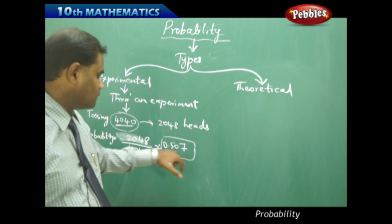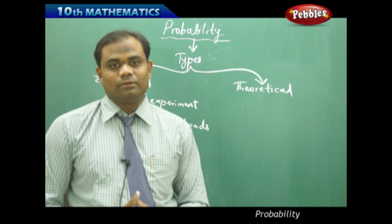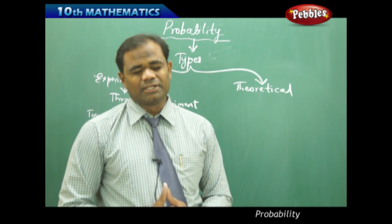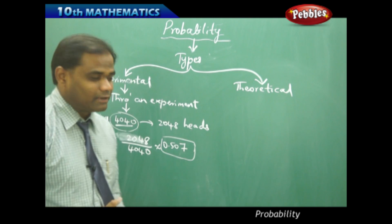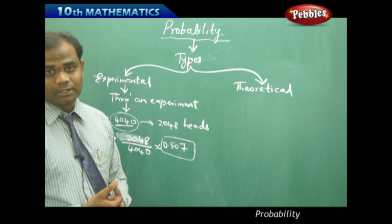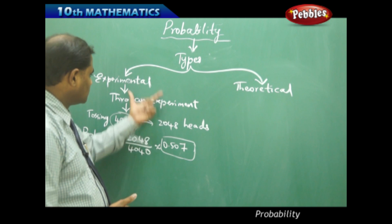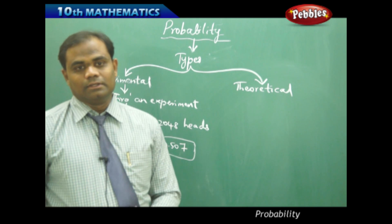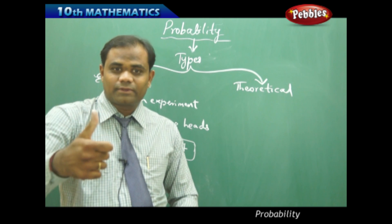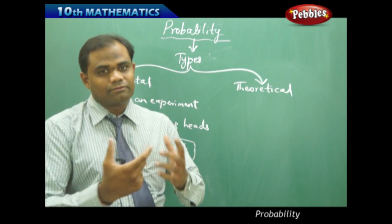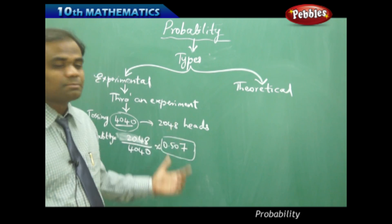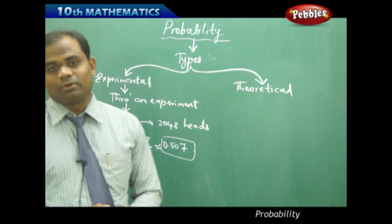The result may not give exactly 0.5. Such experiments, through which we identify the percentage chances of happening and not happening, are called experimental probability — the process of experimenting by tossing a coin many times and finding each result.